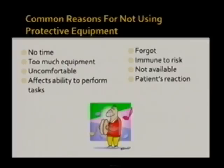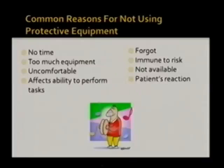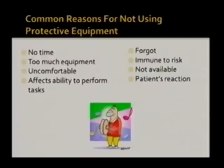One reason is no time — staff say they are too busy. Another is too much equipment — gowns, gloves, masks, etc. Another is being uncomfortable wearing them, saying they can't do the tasks. Sometimes people simply forget. Sometimes staff feel immune to risk — they feel they know exactly how to handle the situation without PPE. Sometimes the equipment is not available at the facility. And sometimes people are afraid of the patient's reaction when they put on gown, gloves, goggles, head covers, or face shields.